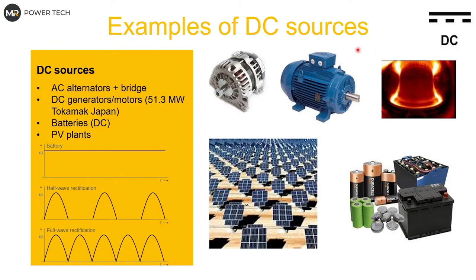If we talk about DC systems: all PV plants are DC sources — they create DC power. All batteries for energy storage are DC. We can have DC generators and motors — for example, for the Tokamak in Japan, Mitsubishi created a 51.3 megawatt DC field generator. Cars have an AC alternator with a bridge rectifier creating quasi-DC voltage.